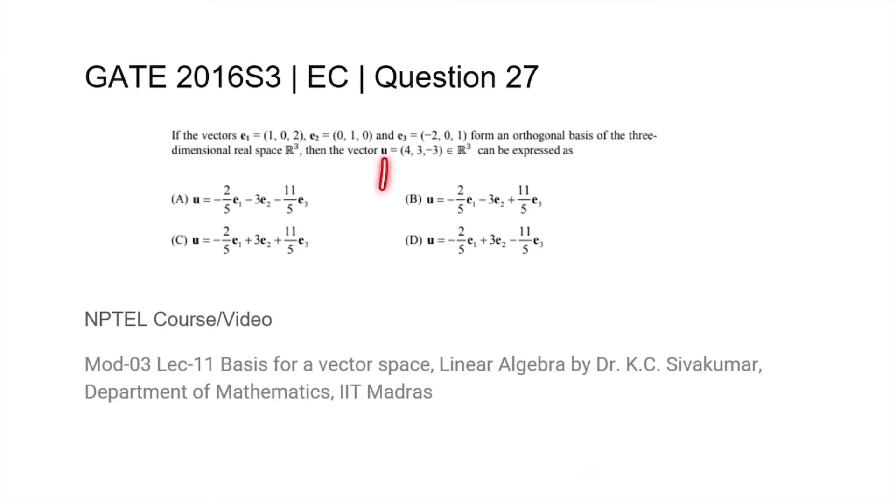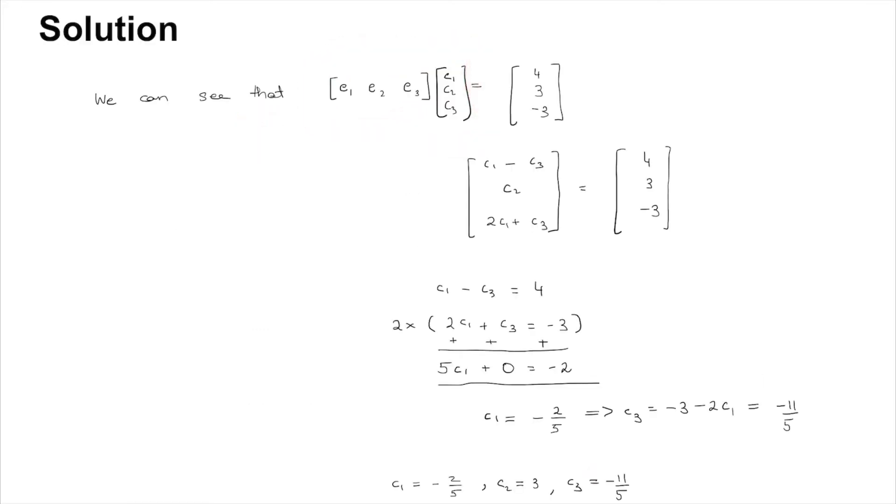The vector u, what is the representation in the basis e1, e2, e3, where e1, e2, and e3 are the basis vectors. And you linearly combine them with constants c1, c2, and c3 to get the vector u.